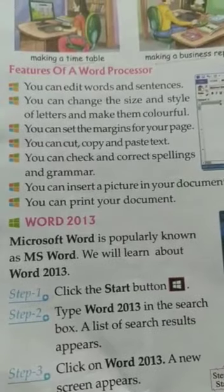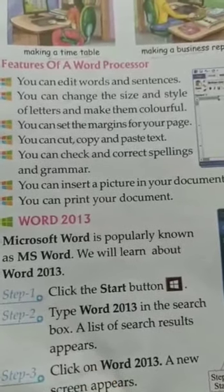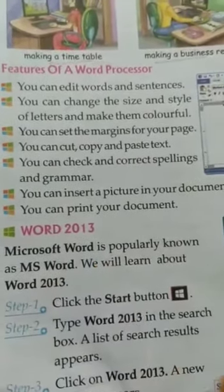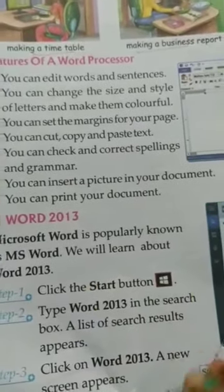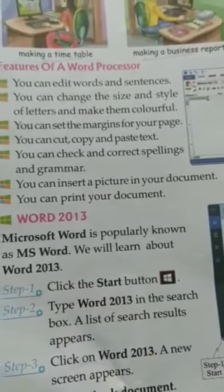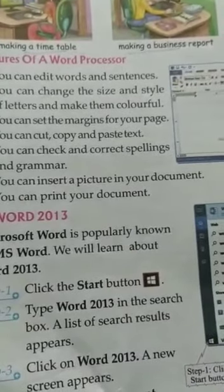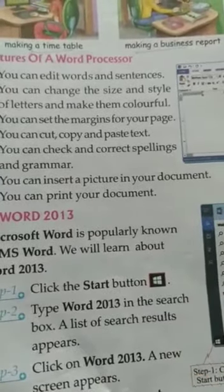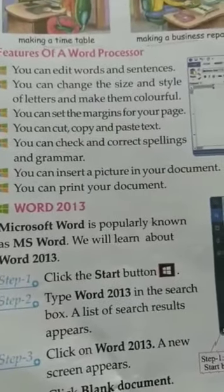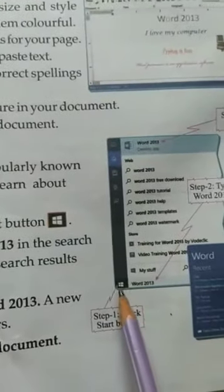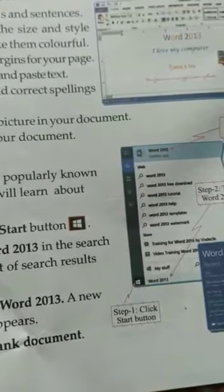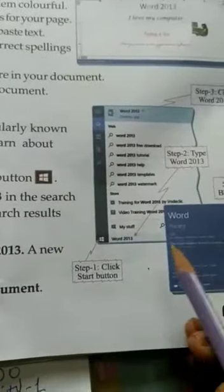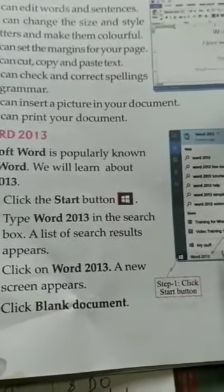Now let's learn how to open Word 2013. Microsoft Word is popularly known as MS Word. We will learn about Word 2013 in this lesson. We have to follow some steps to start Word 2013. First step: click the Start button, which is on the left side of your screen. After that, type Word 2013 in the search box.